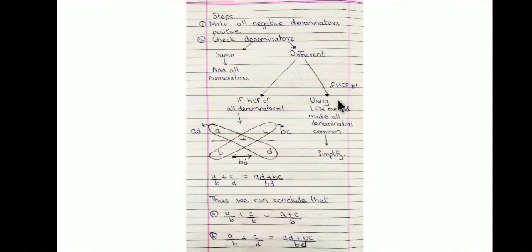If the HCF is not equal to 1 — that means the denominators have a common factor — in that case you will find the LCM of the denominators, make the denominators common, and then add all the numerators. The required rational number would be the sum of all the numerators over the common denominator.